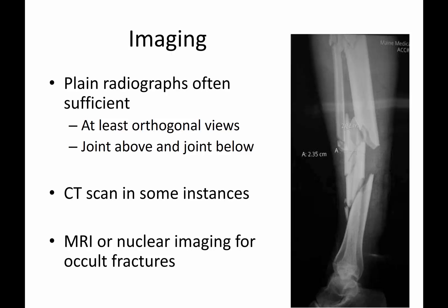In some instances you may need a CT scan, and MRI or nuclear imaging can be helpful for occult fractures. There's a separate lecture on radiology, so we won't go into this too much. Here you have a comminuted — perhaps even segmental — fracture of the tibia, with multiple fragments visible and the major distal fragment distally. You can also see the fibula here. This is certainly a very displaced, segmental, comminuted tibia and fibula fracture.